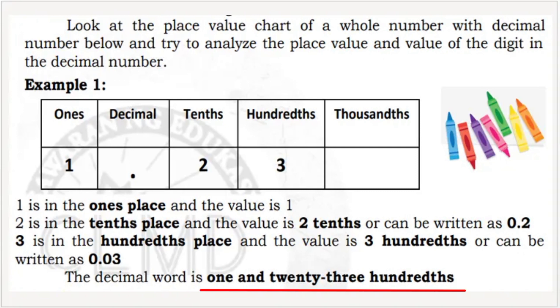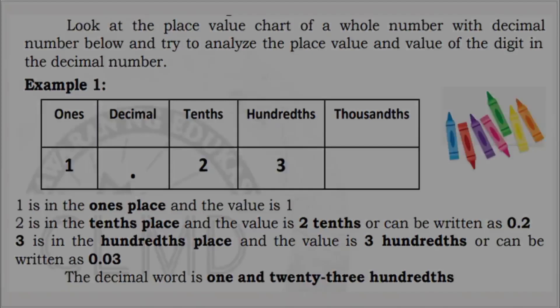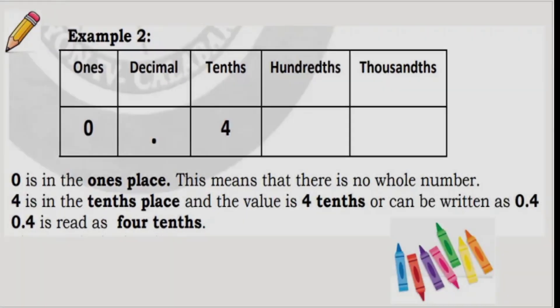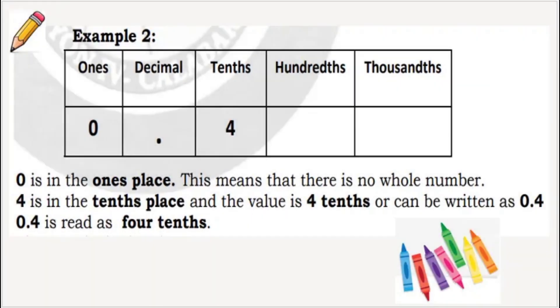The given number is read as 1 and 23 hundredths. Now, let's analyze the second example.